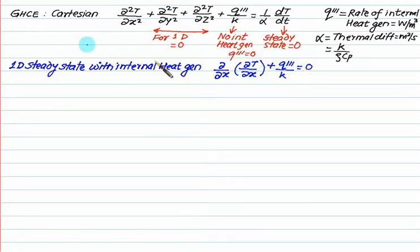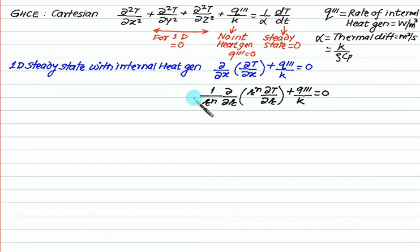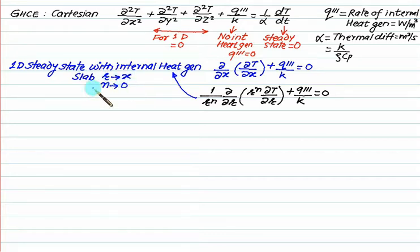To generate simple equations for cylindrical and spherical coordinates, we rearrange using: (1/r^n) · d/dr(r^n · dT/dr). For the Cartesian system (slab), set r = x and n = 0. In that case r^0 = 1, so it reduces back to the same equation written initially.